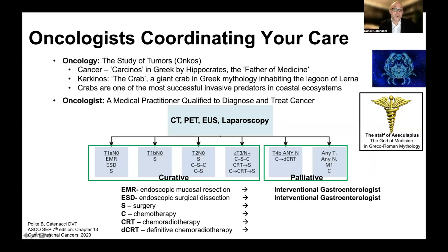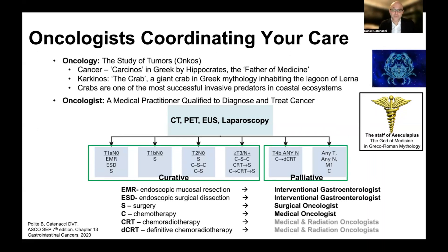Interventional gastroenterologists do further training to perform procedures such as endoscopic mucosal resection, endoscopic surgical dissection, and endoscopic ultrasound. Surgery is performed by a surgical oncologist who's trained accordingly. Chemotherapy or other systemic therapies are performed by the medical oncologist, and radiation is performed by a radiation oncologist. Radiation is usually given along with concurrent chemotherapy, particularly in the curative intent setting, but also in the palliative setting. There are occasions where radiation can be used alone to palliate a symptom from a local mass that's resistant to systemic treatments.